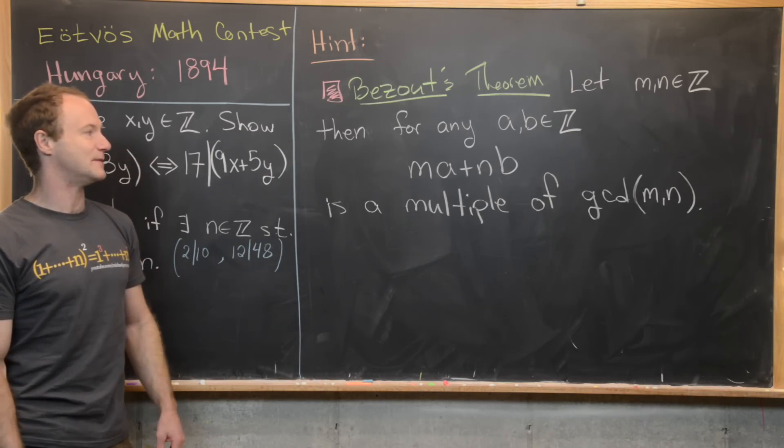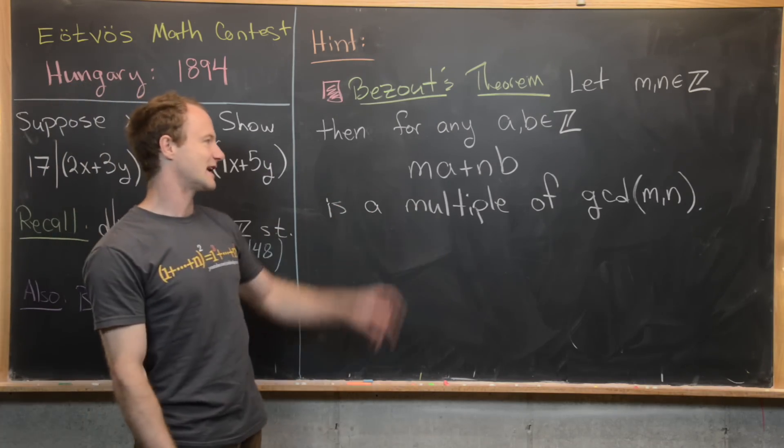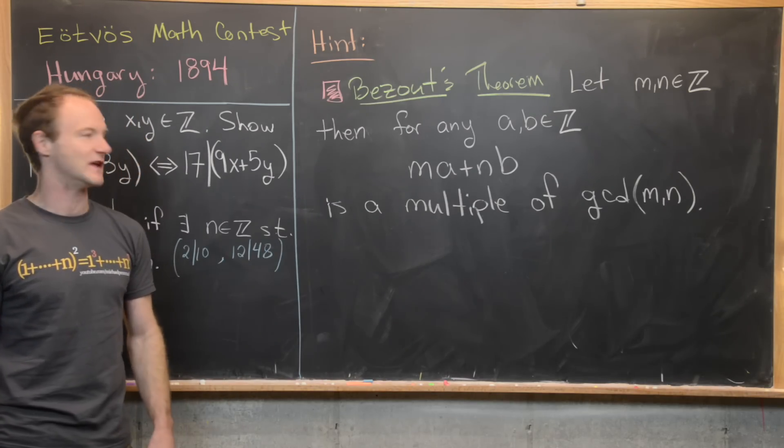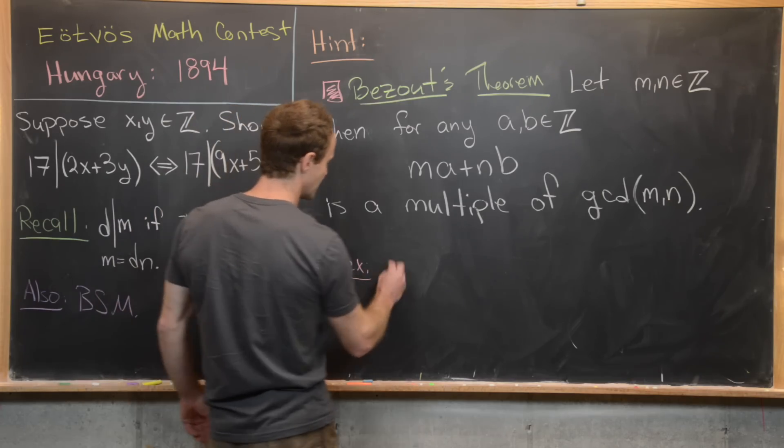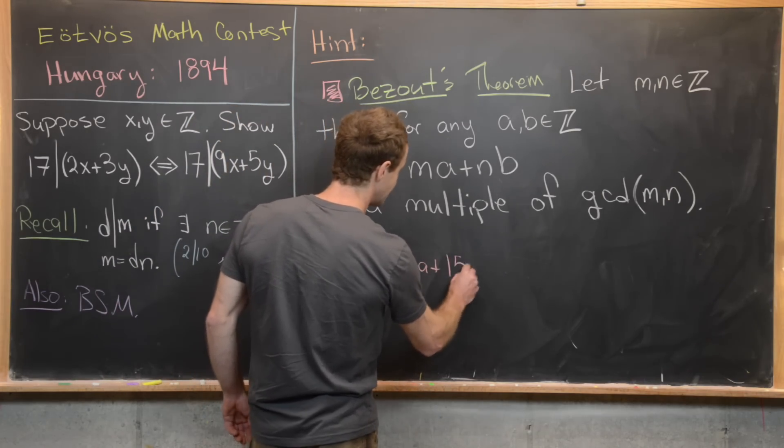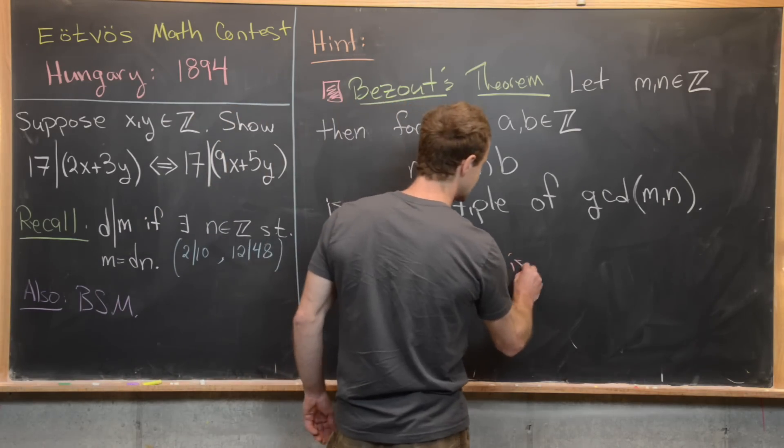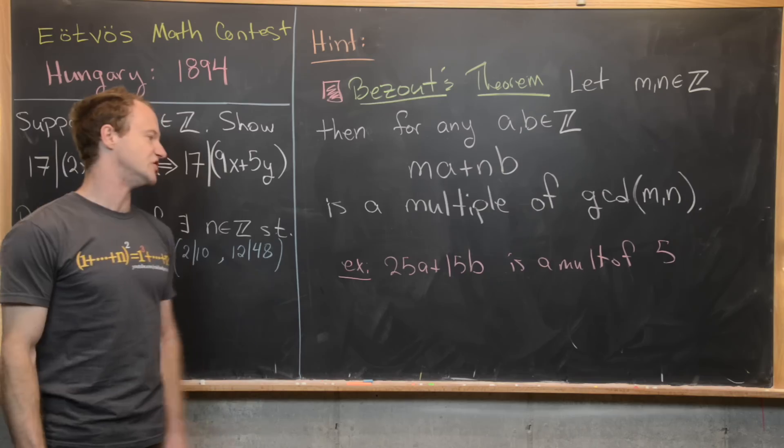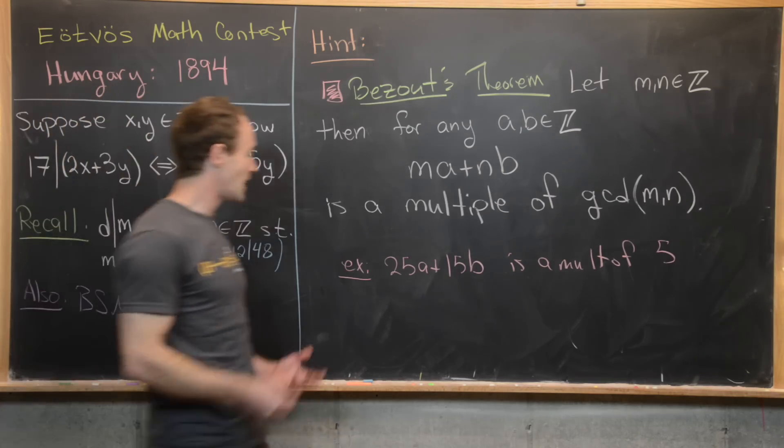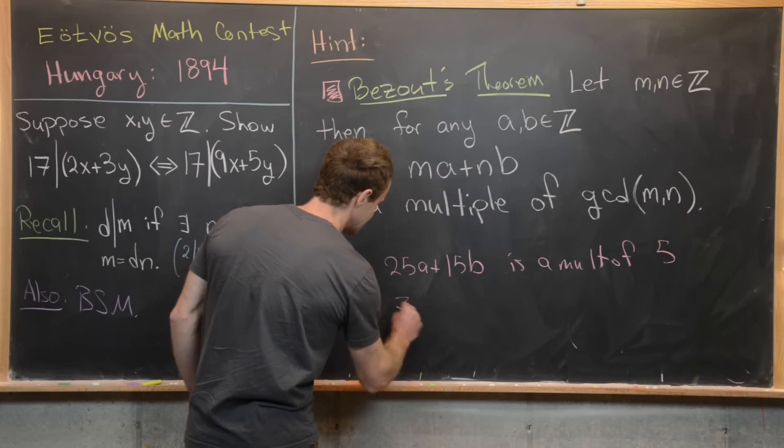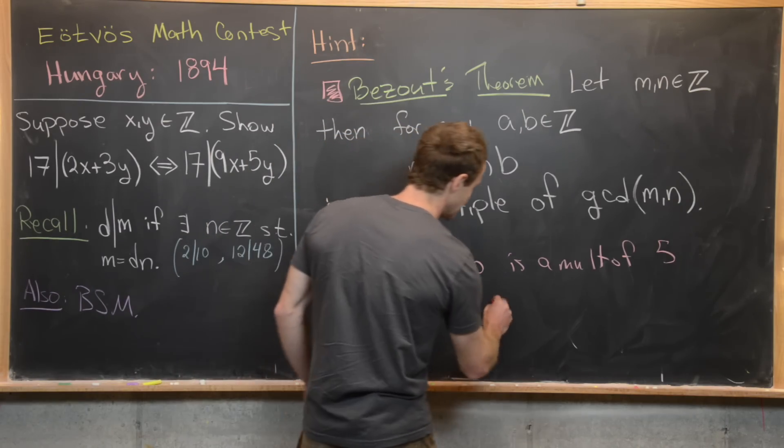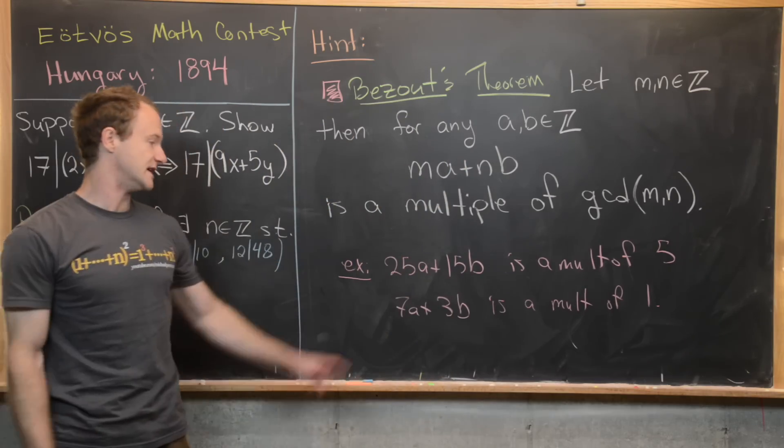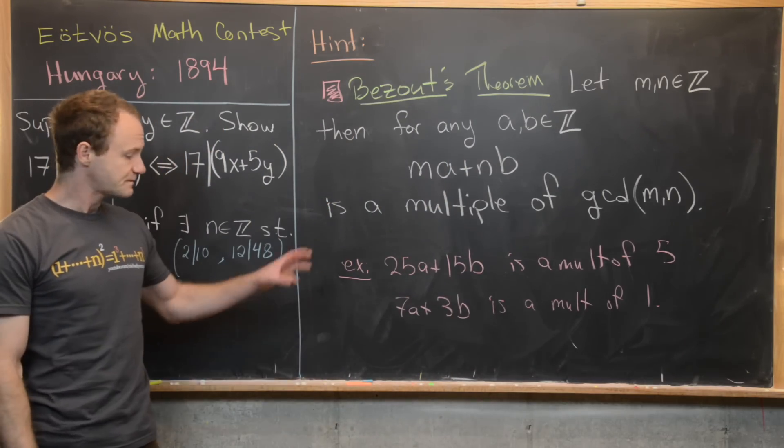And then for any a and b, which are integers, this linear combination ma plus nb is always a multiple of the GCD of m and n. So for example, if we take 25a plus 15b, this thing is a multiple of 5. And that's because 5 is the GCD of 25 and 15. But if we've got something like 7a plus 3b, this is a multiple of 1, because 1 is the GCD of 7 and 3.